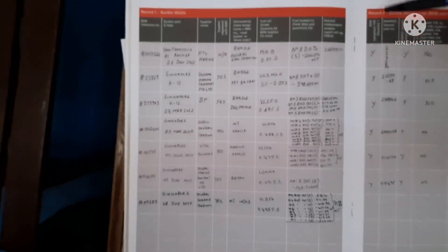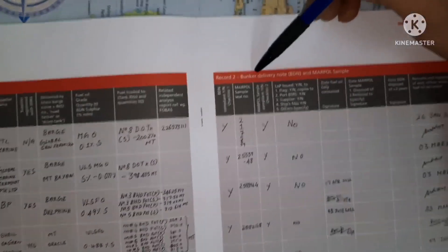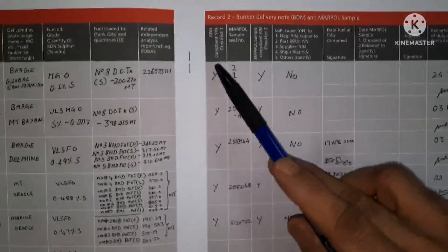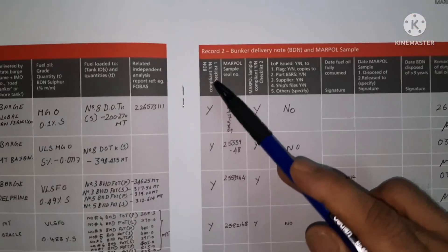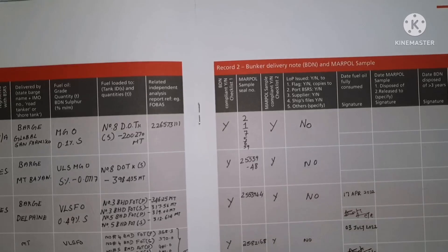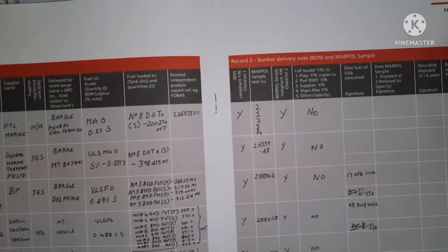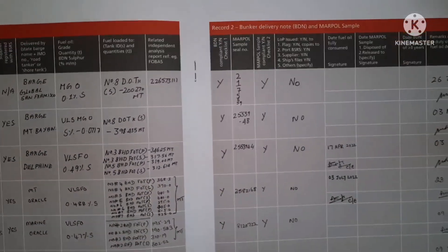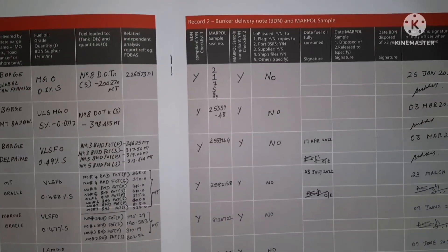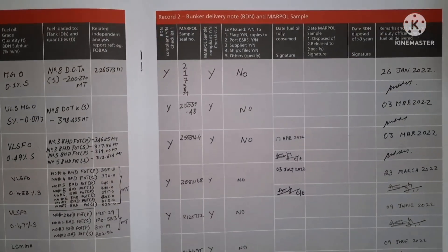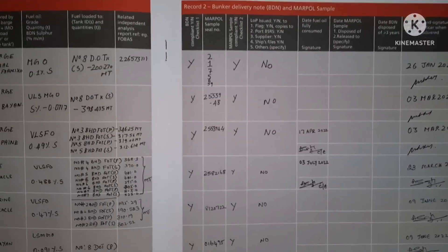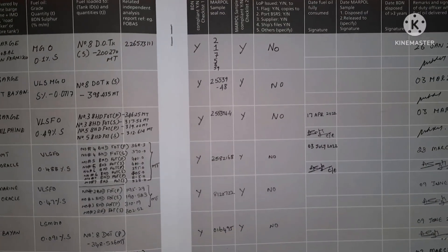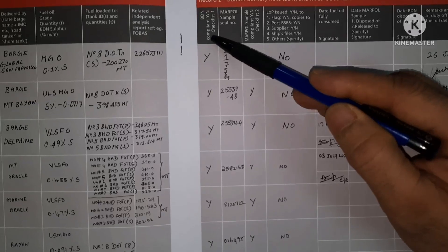Record 2 will have bunker delivery note and MARPOL hold sample details. This means whether the BDN is compliant to checklist 1. Before taking bunker, the bunker supplier will give you a sampling test report in which you will find the sulfur content. If that sulfur content is compliant — whether it is regulation 14.1 or 14.4 — you can take it. You have to check whether it is yes or no.